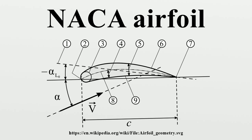Six series: An improvement over one series airfoils with emphasis on maximizing laminar flow. The airfoil is described using six digits. For example, the NACA 612-315 airfoil has the area of minimum pressure 10% of the chord back, maintains low drag 0.2 above and below the lift coefficient of 0.3, has a maximum thickness of 15% of the chord, and maintains laminar flow over 50% of the chord.